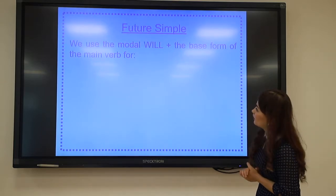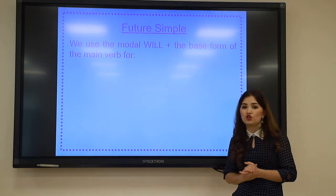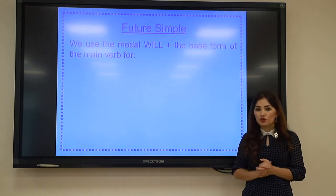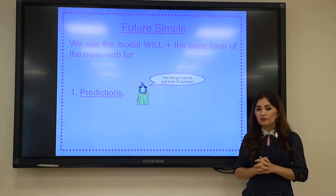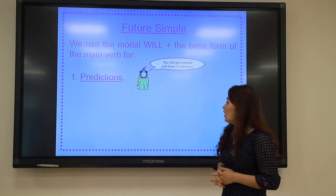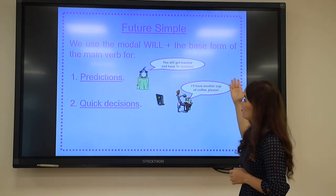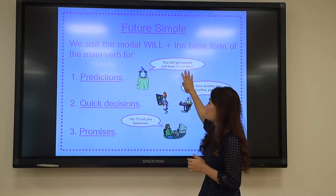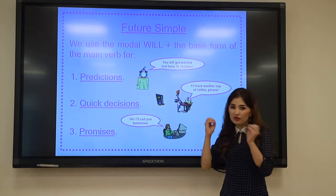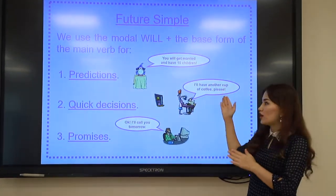The next topic is the uses of future simple. We use the modal 'will' plus the base form of the main verb for predictions. For example: You will get married and have ten children. This is a general prediction.